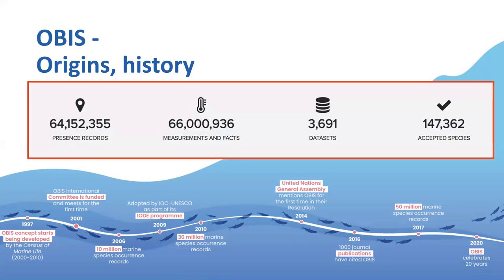Today, OBIS integrates over 60 million presence records from 3,691 datasets of nearly 150,000 marine species. To give you an idea, this year we added 6 million records from 574 new datasets — that is more than one new dataset per day.